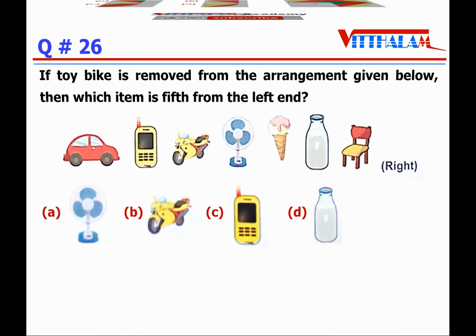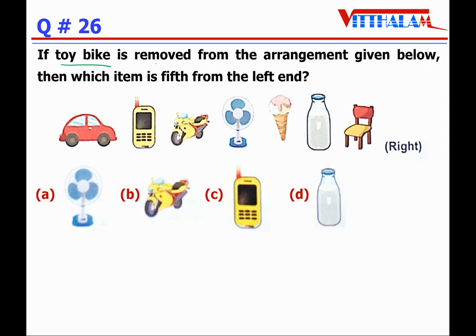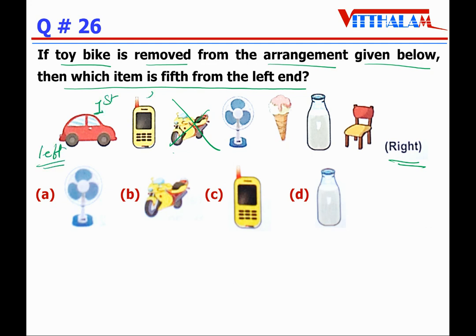Next, Question 26: if the toy bike is removed from the arrangement given below, then which item is fifth from the left end? The toy bike is removed. Now counting from the left: first, second, third, fourth, and this is fifth. So the fifth item from the left is a milk bottle. The answer is D.